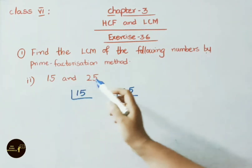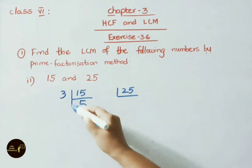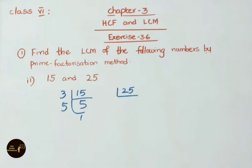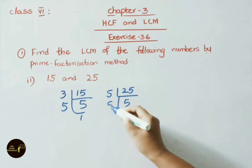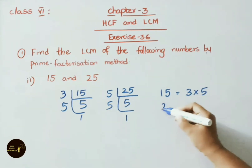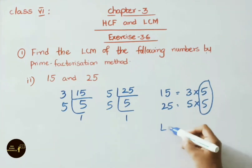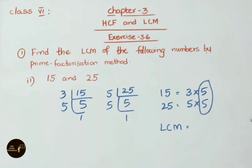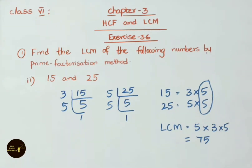Second sum: LCM for 15 and 25. For 15: 3 × 5 = 15, then 5. For 25: 5 × 5 = 25, then 5 × 1 = 5. Prime factors for 15 = 3 × 5. Prime factors for 25 = 5 × 5. Common factor is 5. Remaining factors are 3 and 5. LCM = 5 × 3 × 5: 5 × 3 = 15, 15 × 5 = 75. Therefore LCM for 15 and 25 is 75.